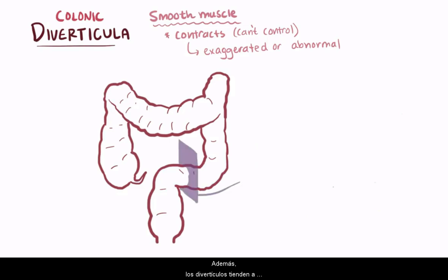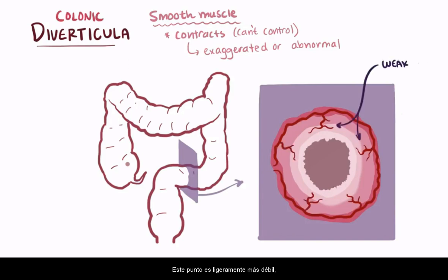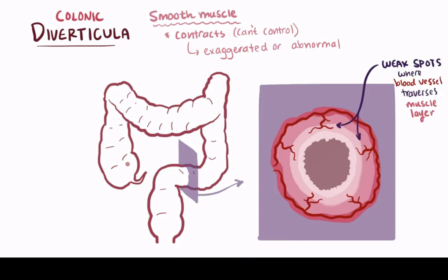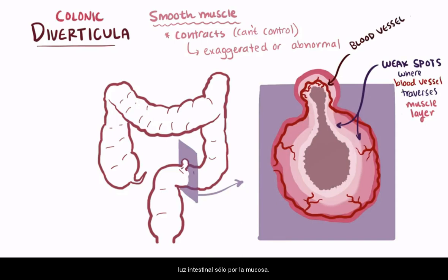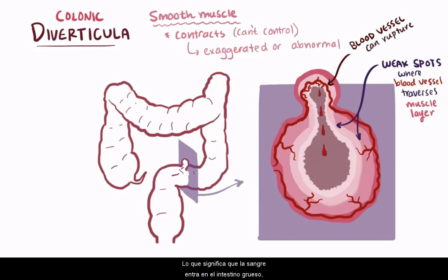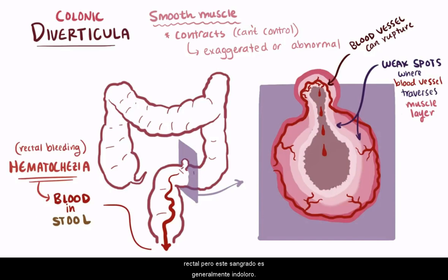Additionally, diverticula tend to form in the spots where the blood vessels that supply the intestinal walls traverse the muscle layer. This spot is slightly weaker, making it more likely for diverticula to form. As a diverticulum forms, that blood vessel responsible for wall weakness becomes separated from the intestinal lumen only by mucosa, and is therefore subject to injury and predisposed to rupture, meaning blood gets into the large intestine and would then be passed in the stool. This is known as hematochesia, or rectal bleeding, but this bleeding is usually painless.